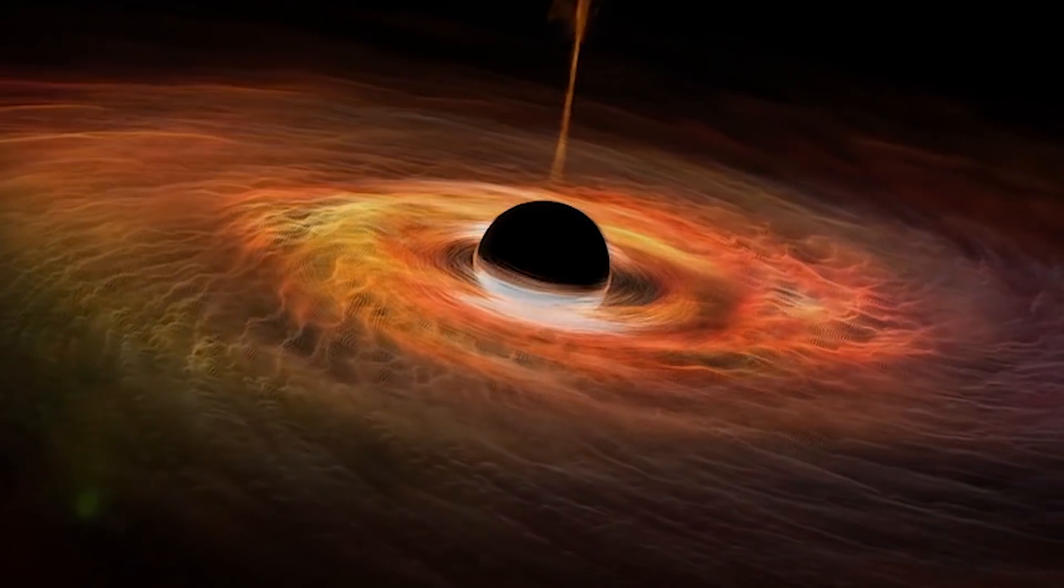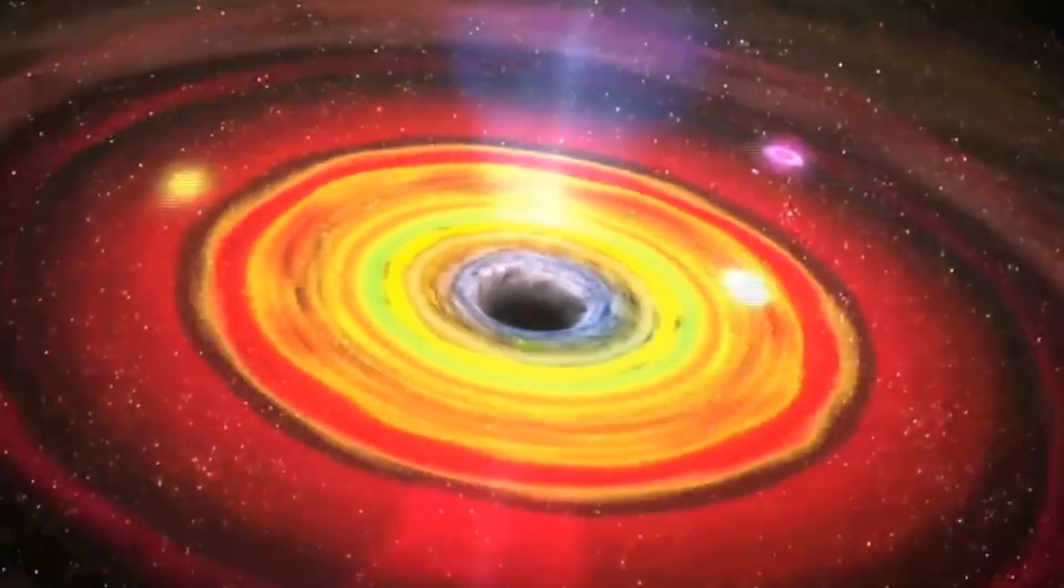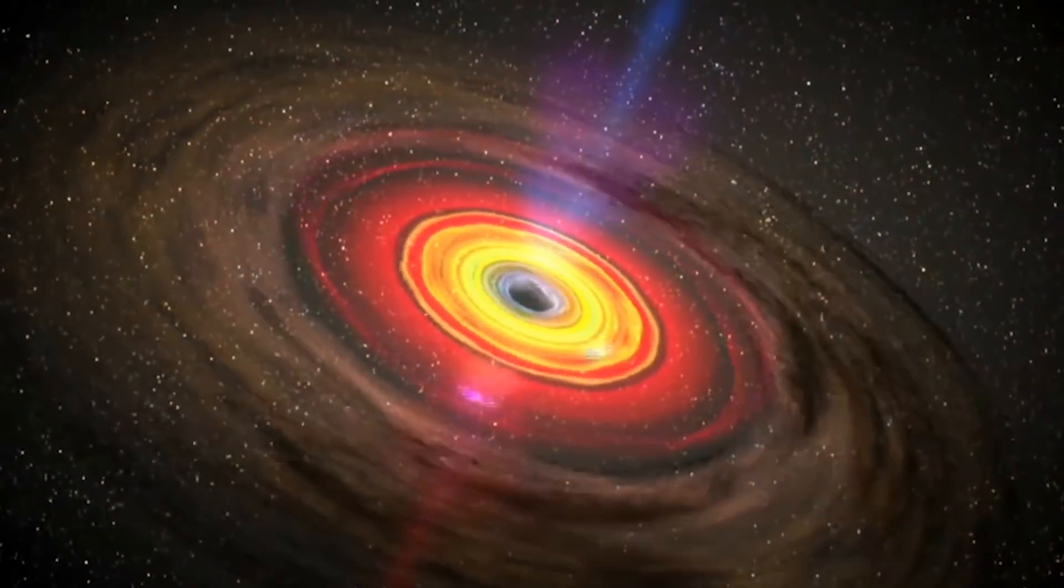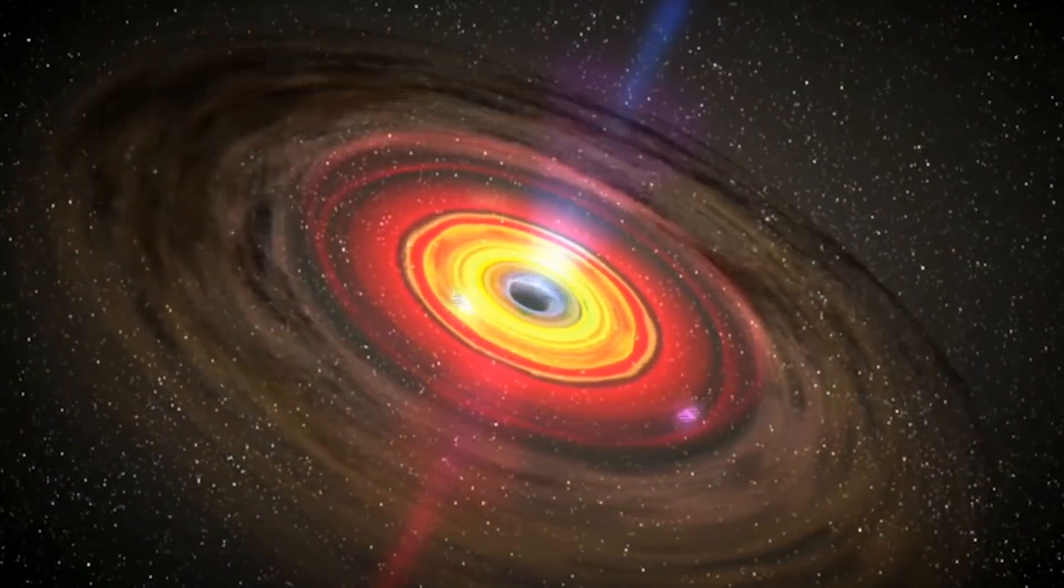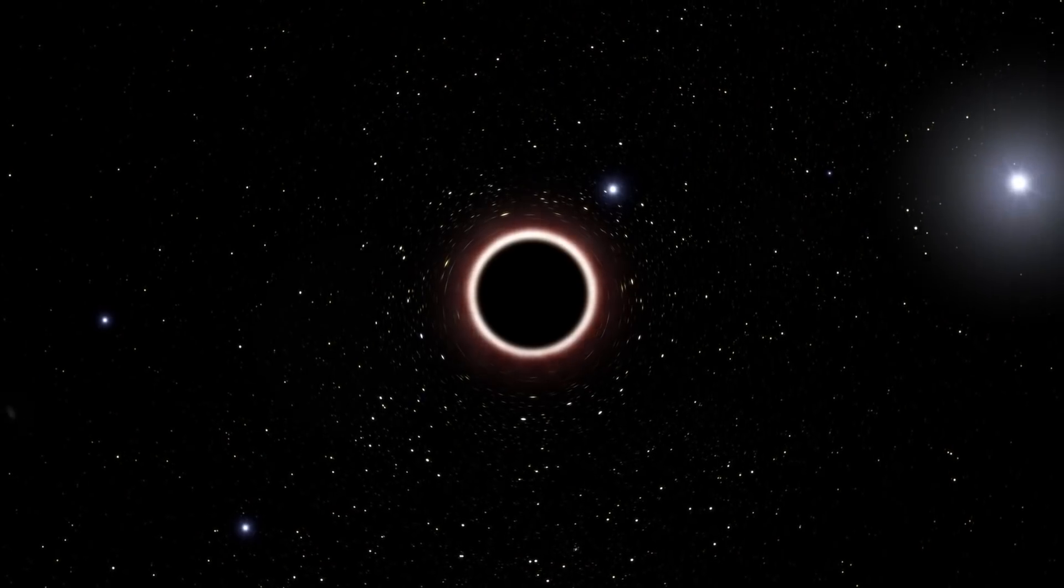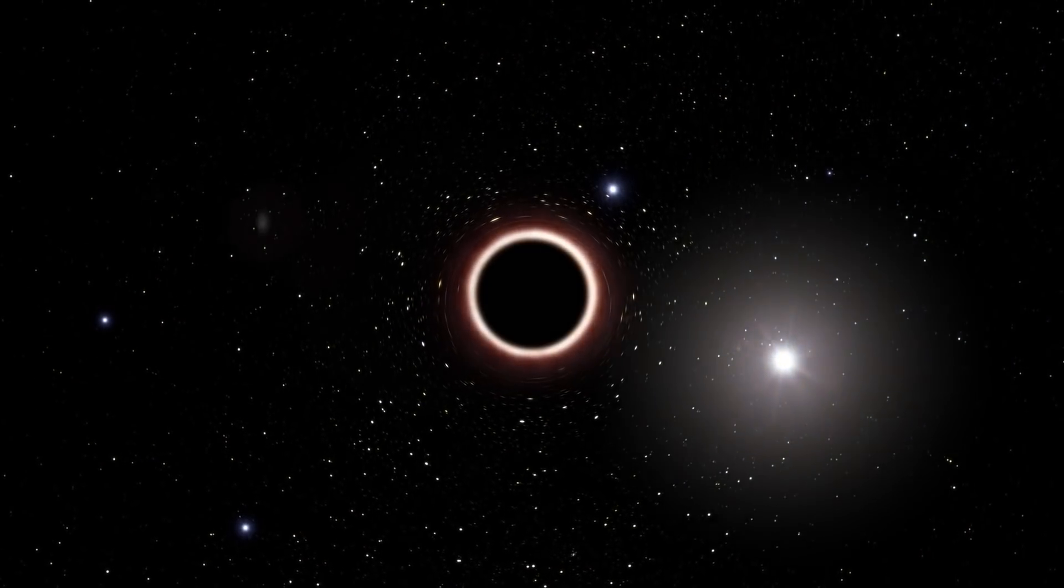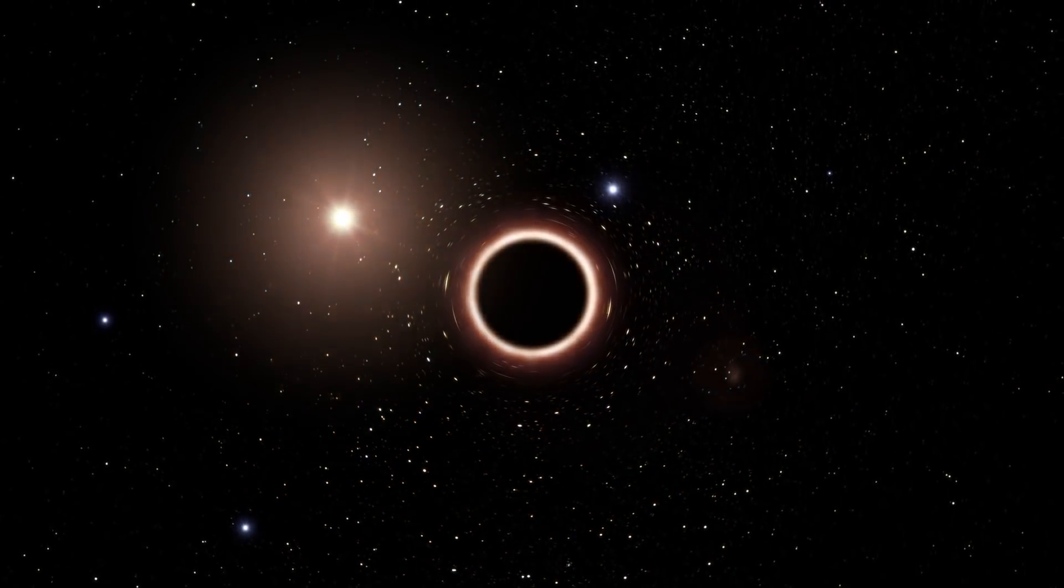The closest black hole that we know of is V616 Monocerotis. It is located about 3000 light years away from us and it has about 9 to 13 times the mass of our sun. Now we know it is there because it is located in a binary star system with a star with about half the mass of our sun.